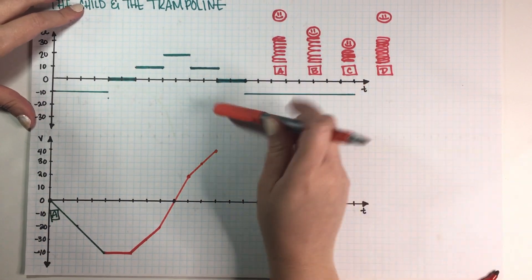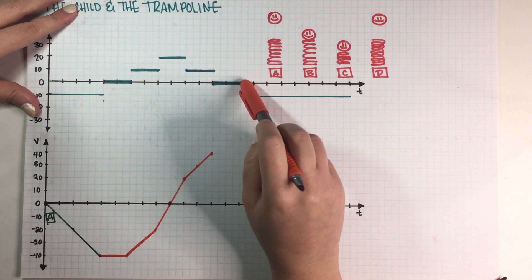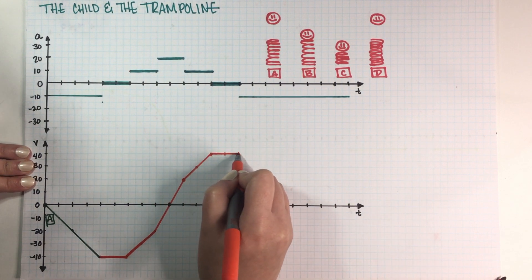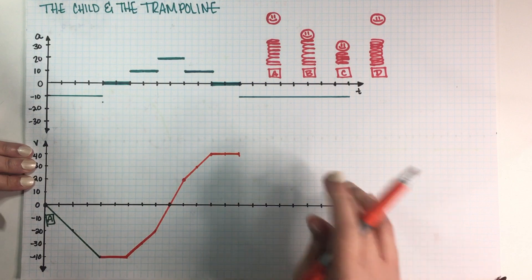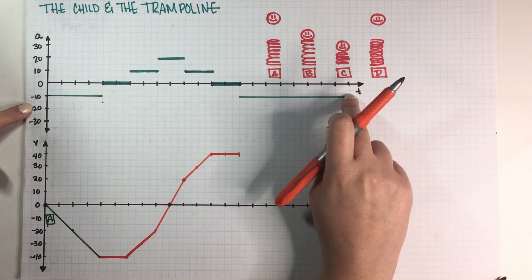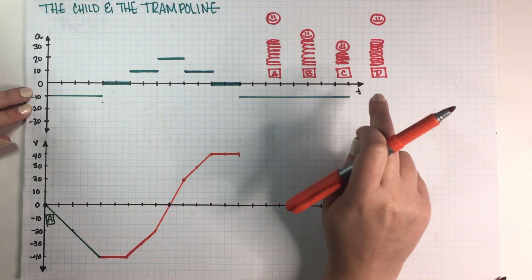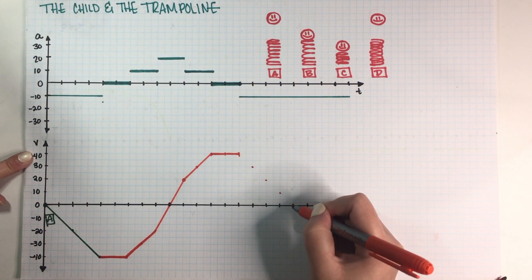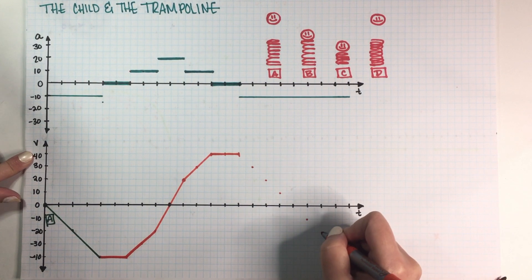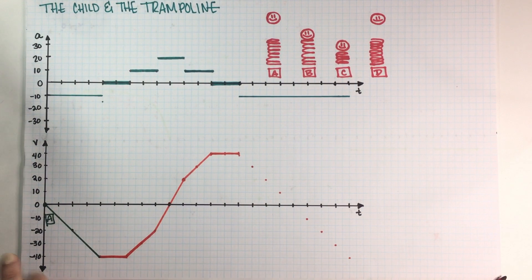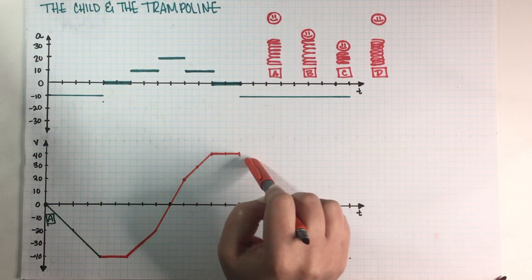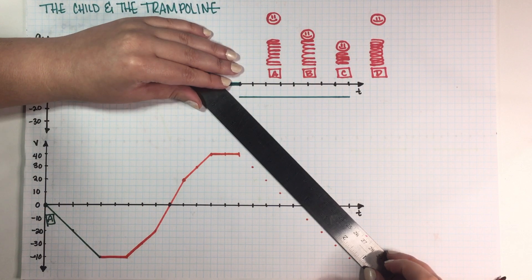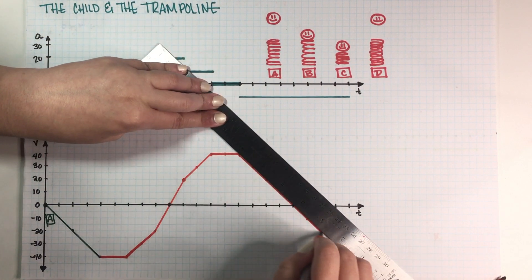The next part has acceleration equal to zero, which means for every tick mark to the right I move zero spaces up or down — two tick marks, no movement. Then for the rest of the problem, acceleration is equal to negative 10, so for every tick mark I'm moving down 10 spaces. Starting at 40: one tick mark, 10 spaces down, repeated across all remaining tick marks. This follows the negative 10 acceleration chunk — for every tick mark to the right, I go down 10 spaces. That completes the velocity graph.